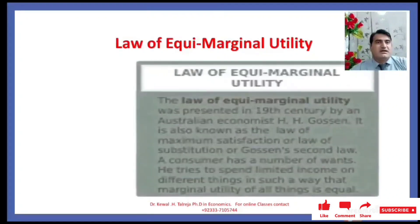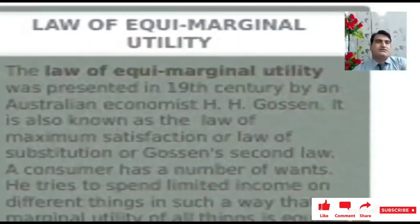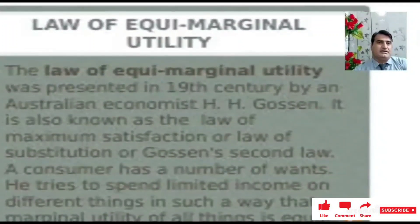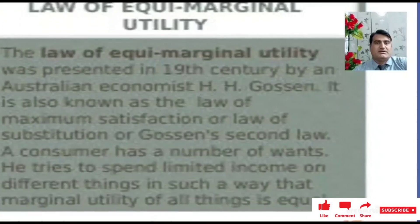What is the Law of Equimarginal Utility? The Law of Equimarginal Utility was presented in the 19th century by an Austrian economist H.H. Gossen. It is also known as the Law of Maximum Satisfaction, the Law of Substitution, or Gossen's Second Law. A consumer has a number of wants and tries to spend limited income on different things in such a way that the marginal utility of all things is equal.